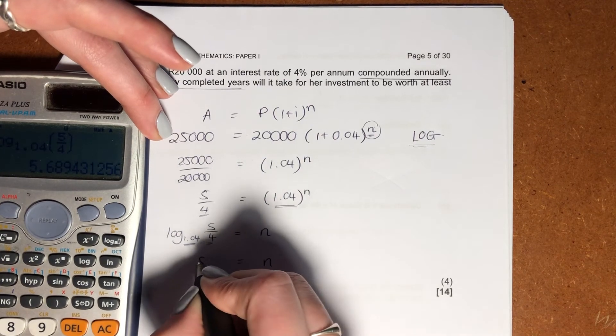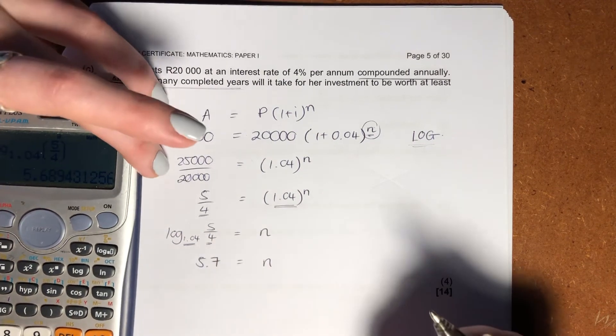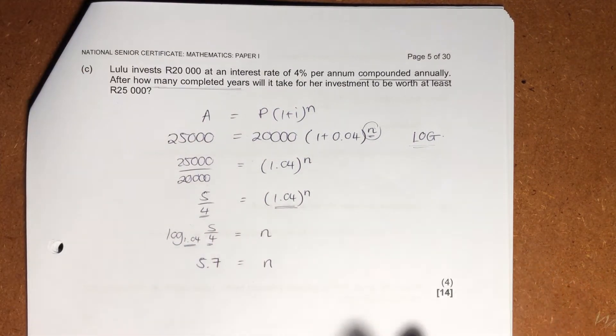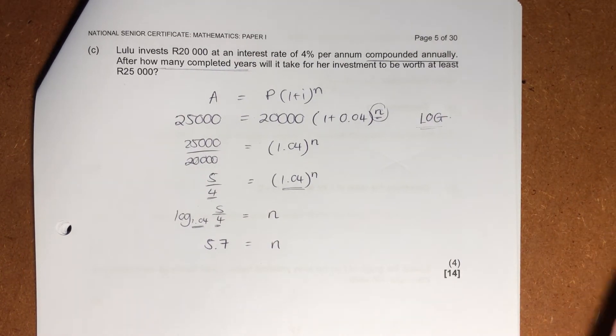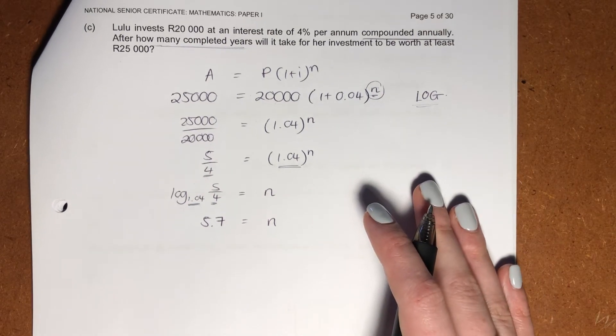So n here is going to be 5.7. You could be saying, oh, Maggie, why did you put 5.7 as opposed to 5.689? Because on the front of the paper, it said to two decimal places. So please be careful there.